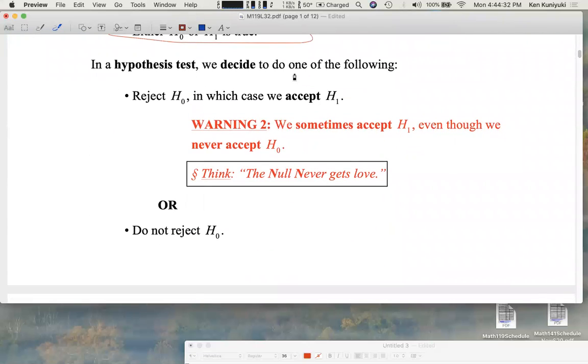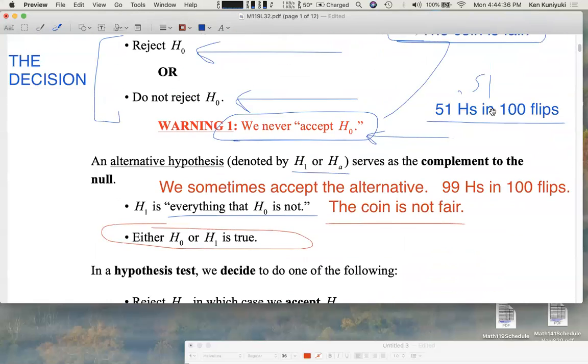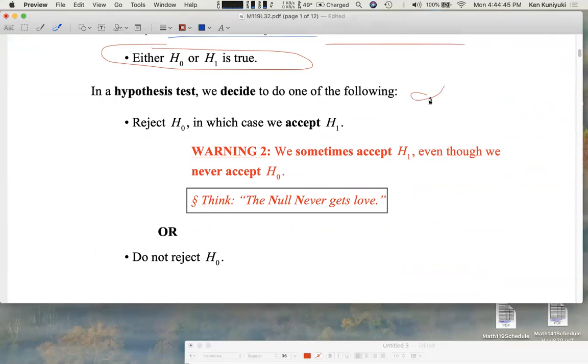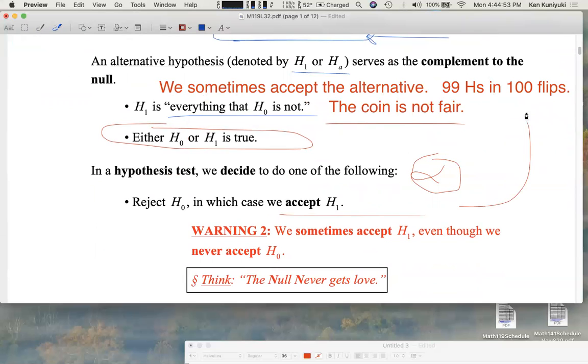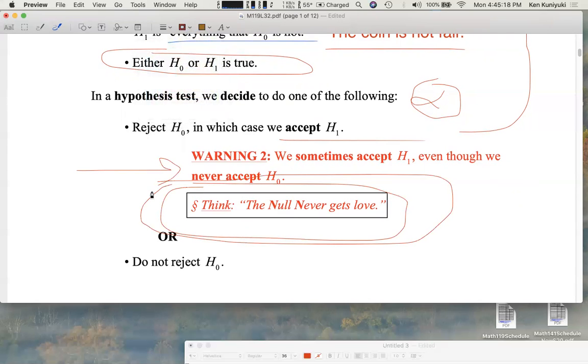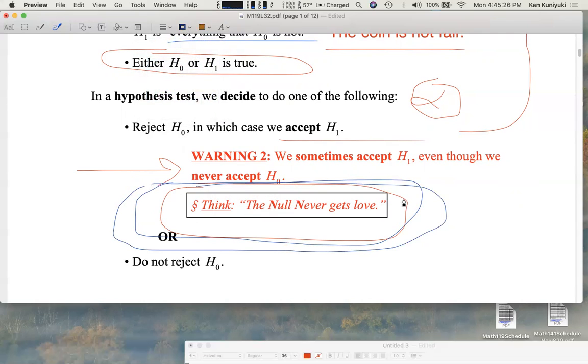So in the hypothesis test, we decide to do one of the following, based on sample data and based on that elusive alpha I've told you about, based on the significance level as well. So based on the sample data and whatever alpha happens to be, we're going to reject the null hypothesis, in which case we accept the alternative, as I just said, if we have 99 heads in 100 flips. We sometimes accept the alternative, even though we never accept the null. And one way to remember this, we sometimes accept the alternative, we never accept the null. The null never gets love. The null never gets love. I'll really emphasize that. The poor null. The null never gets love.